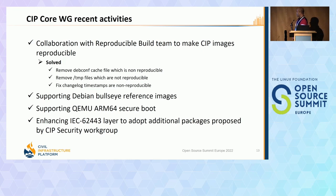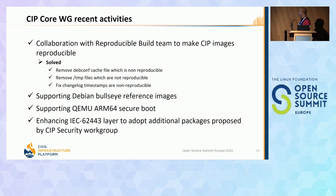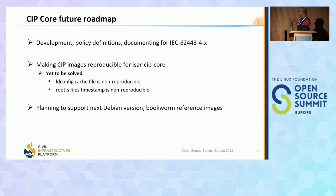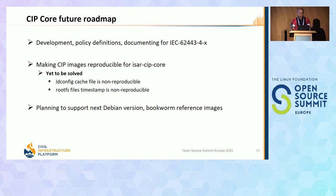Recently, CIP core started supporting Debian Bullseye based reference images and supported CAMU ARM64 secure boot. An IEC layer was added to adopt additional packages proposed by the security workgroup. Future activities include further development and defining policies for IEC 62443 compliance. Remaining reproducible build issues include ldconfig cache files and rootfs file timestamps. The roadmap also includes supporting and discussing the next version of Debian Bookworm and creating reference images for it.